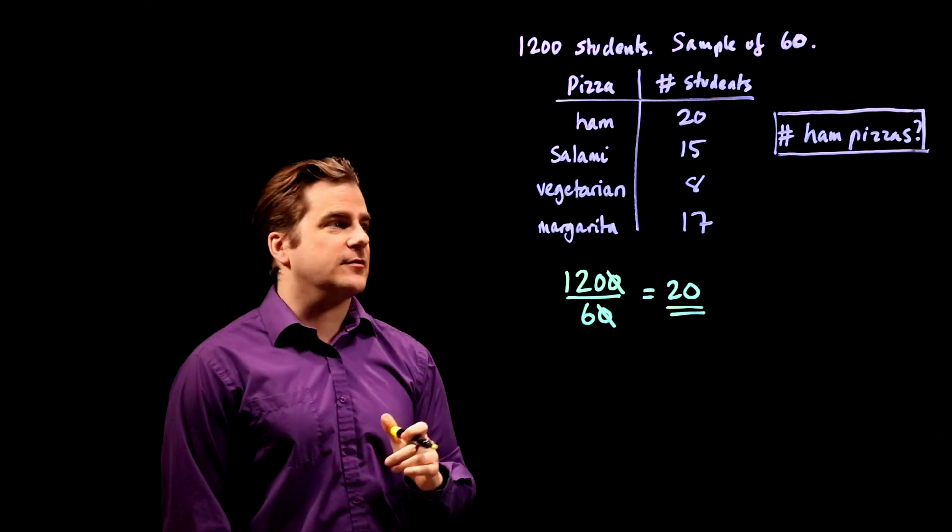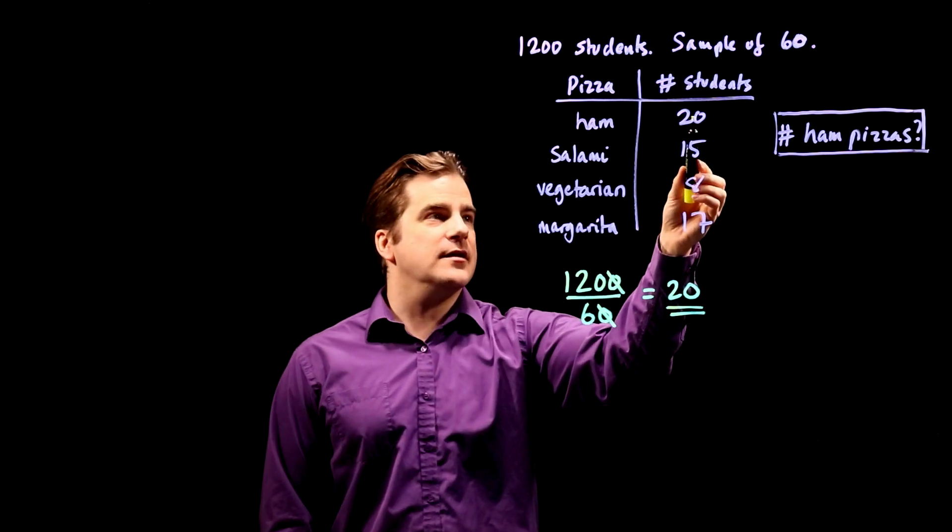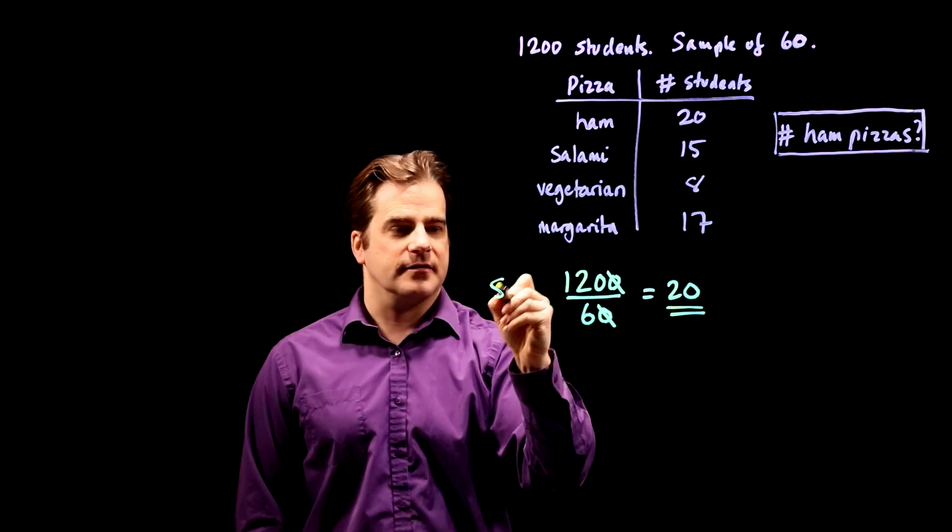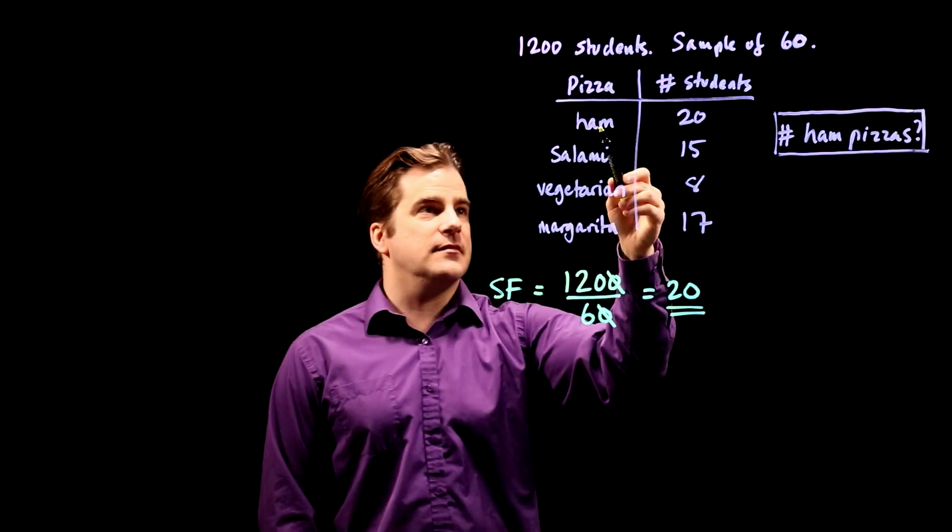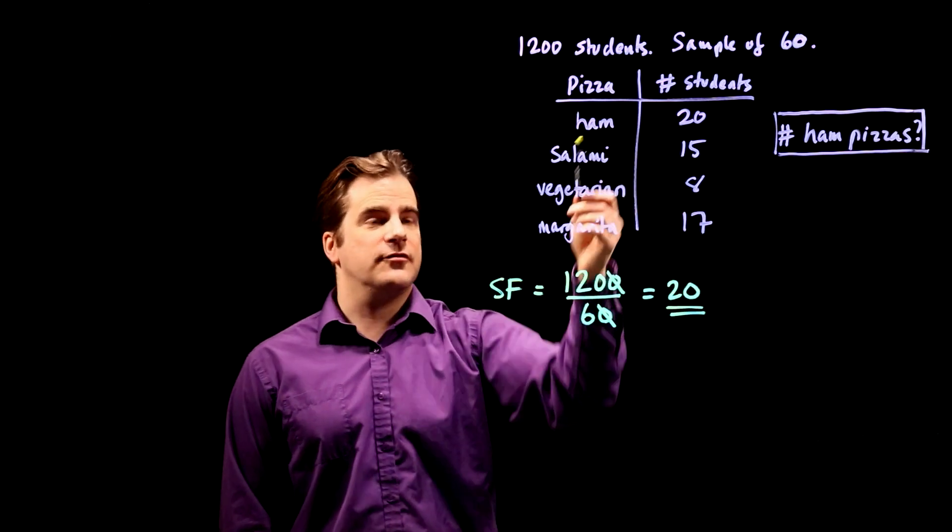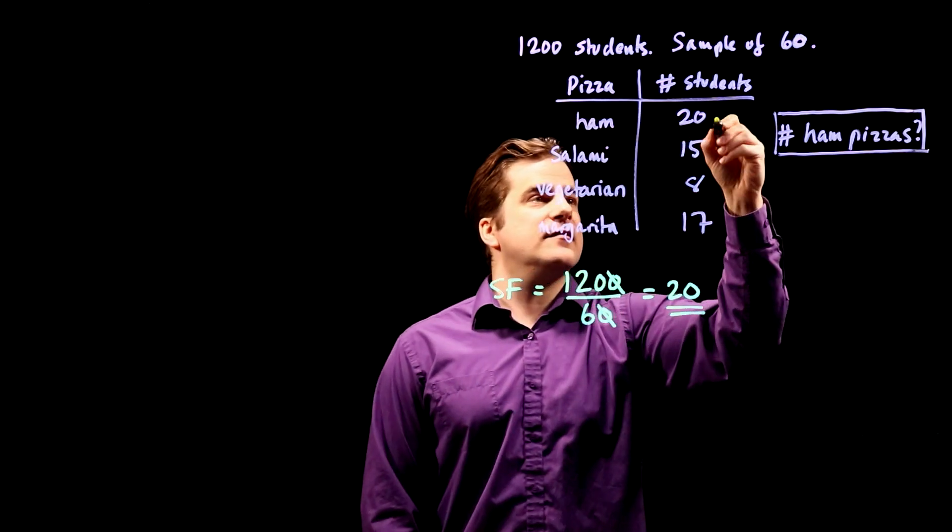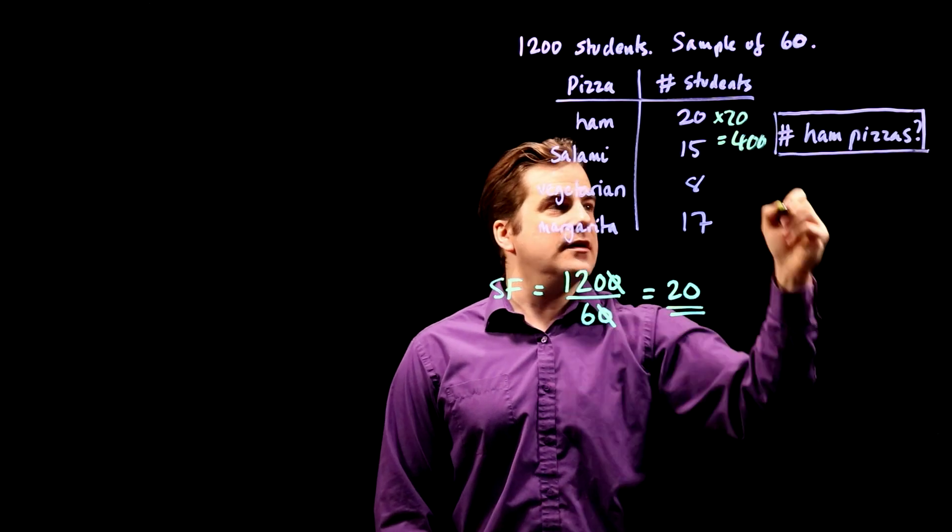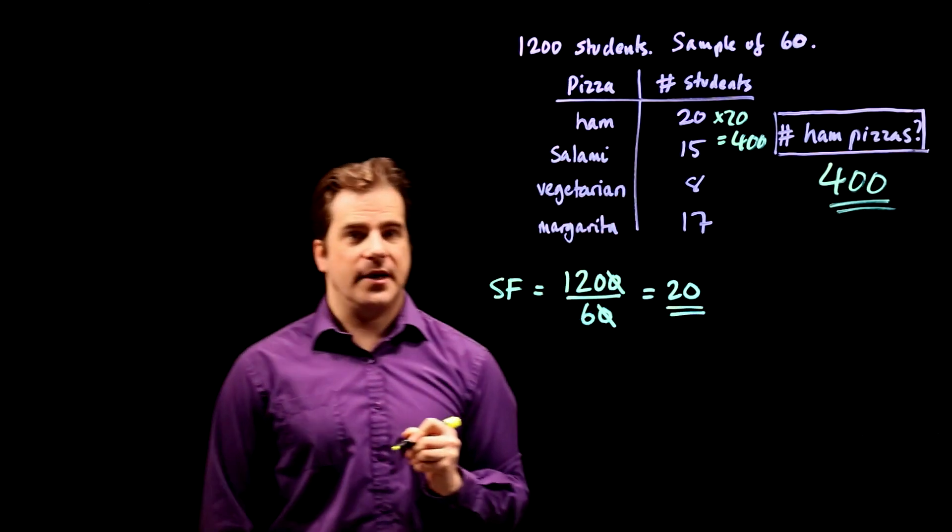So always work that out, and now all you do is multiply the number of students in the sample by the scale factor SF to get the actual number of pizzas for everyone. So 20 times 20 is 400. She should order 400 ham pizzas.